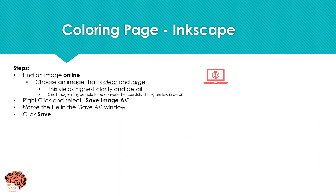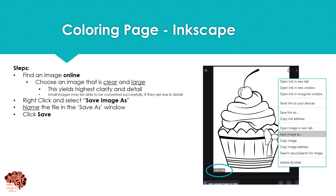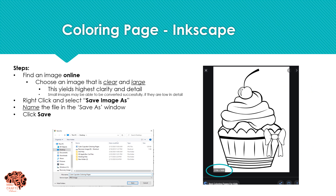The first thing you want to do is go online and find an image. You want to find an image that is clear and large. You can see the size in the bottom corner when you look at your picture. The bigger the image, the more clear your SVG file is going to be converted. You're going to right click on that image and click Save As, give it a name, and save your file to your computer.